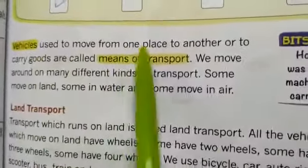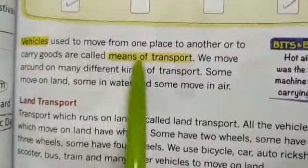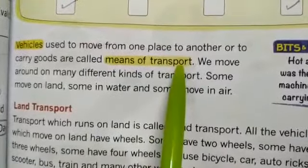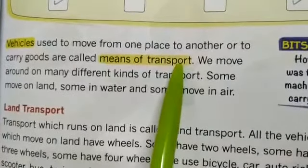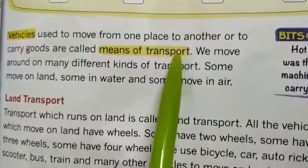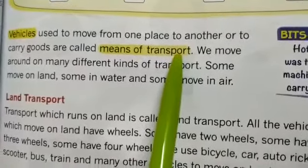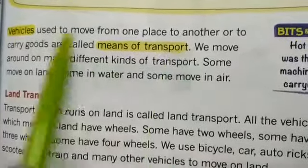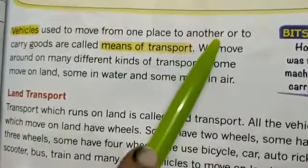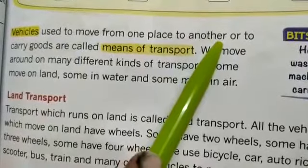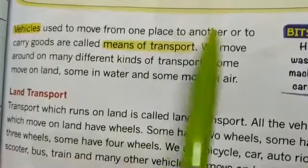Vehicles used to move from one place to another or to carry goods are called means of transport. This chapter is about means of transport. The transport by which we go from one place to another, or take some goods from one place to another, is called means of transport.